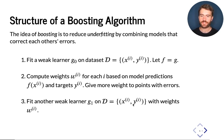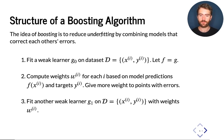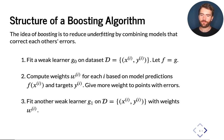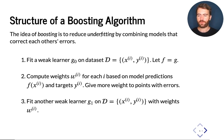In practice, most algorithms we have seen — including linear regression or decision trees — are all able to minimize weighted losses as well. For example, inside the linear regression algorithm, we can simply add weights to each term in the loss — our loss is a sum of losses over each training point, and we can add a multiplicative weight to the mean squared error at each data point. We can still optimize the objective in the same way, either using gradient descent or other approaches.